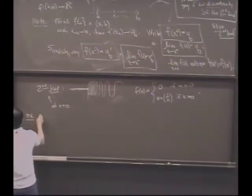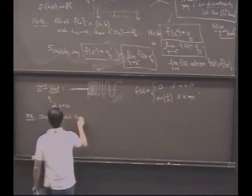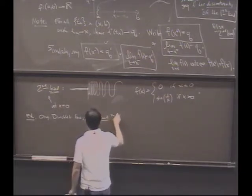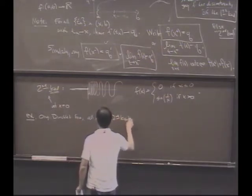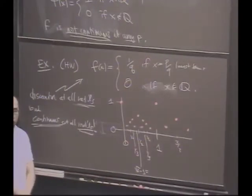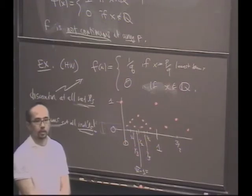So in the original Dirichlet function, all discontinuities are of the second kind. What about here? What kind of discontinuities do we have here? It's continuous at all irrationals and discontinuities at all rationals.